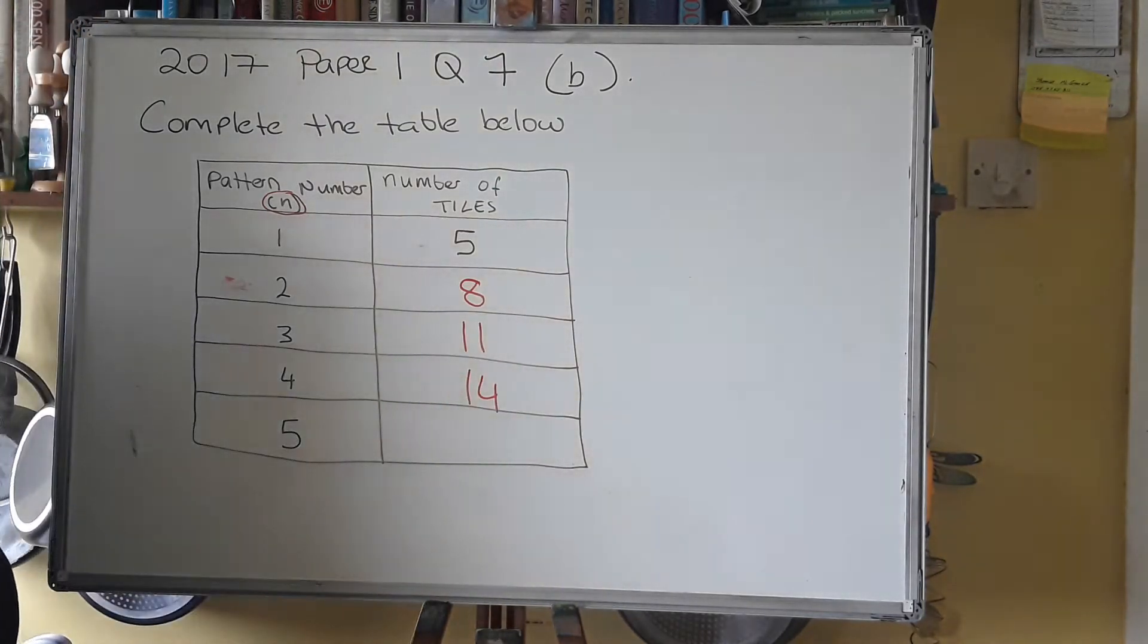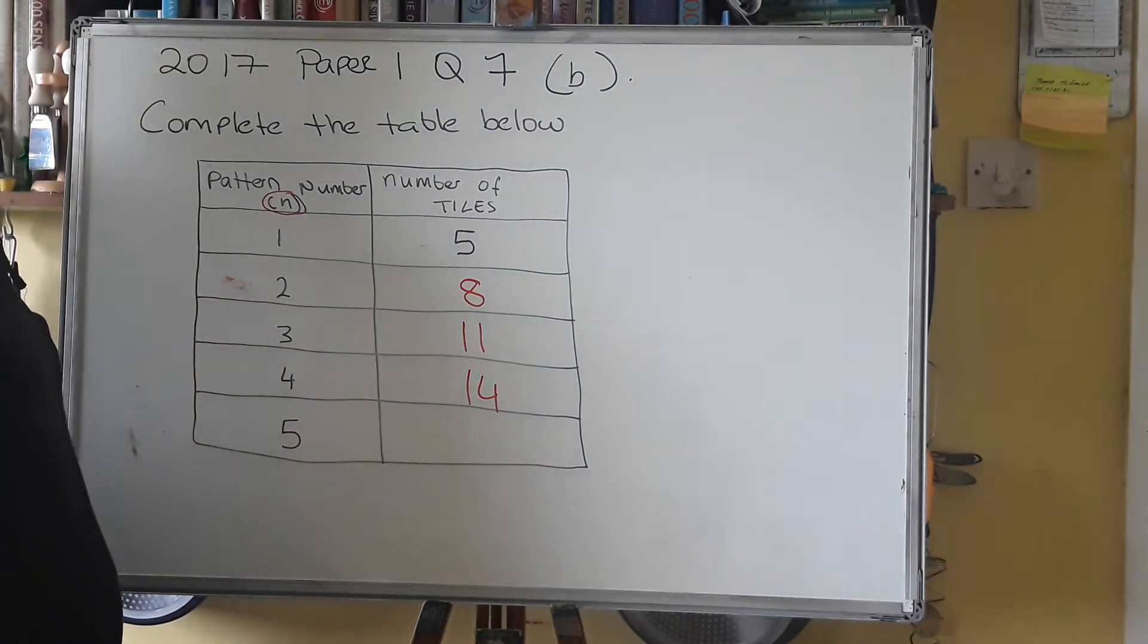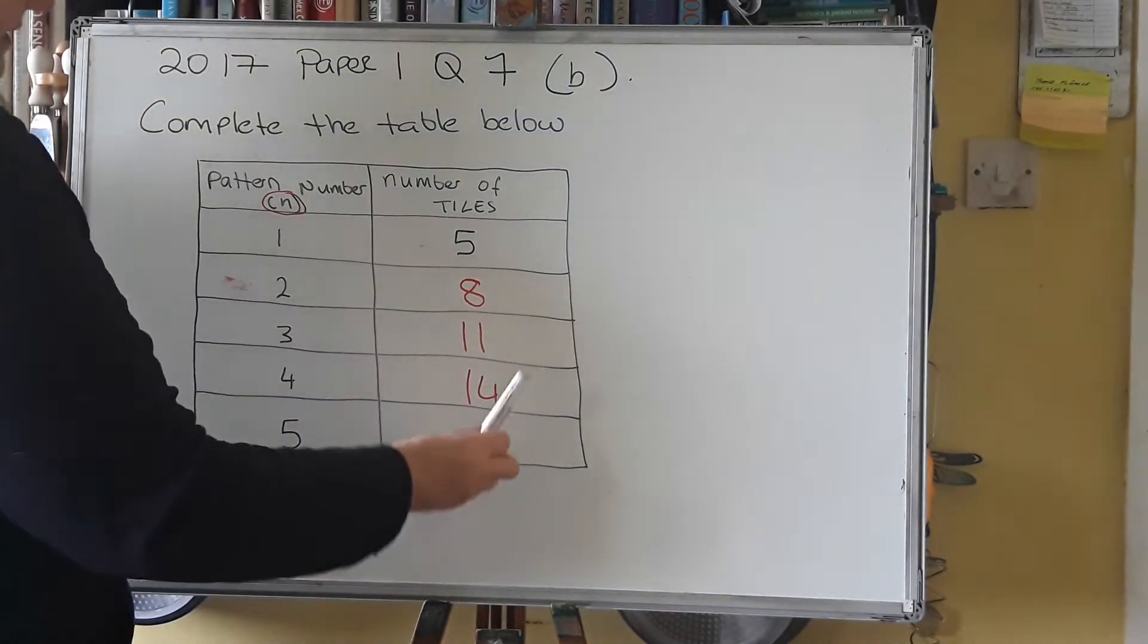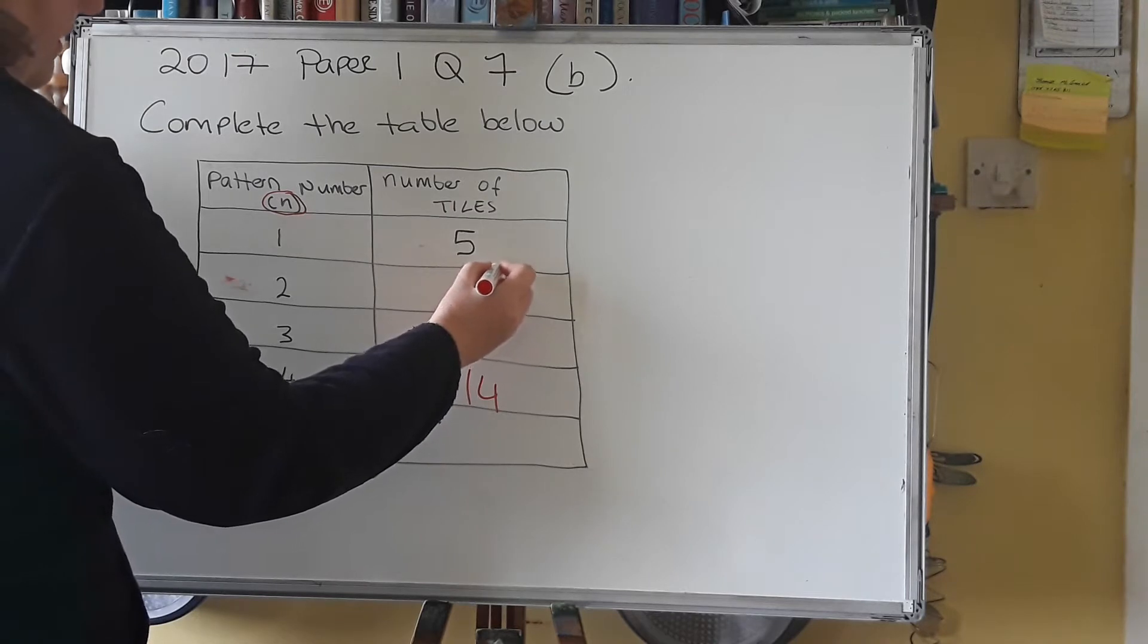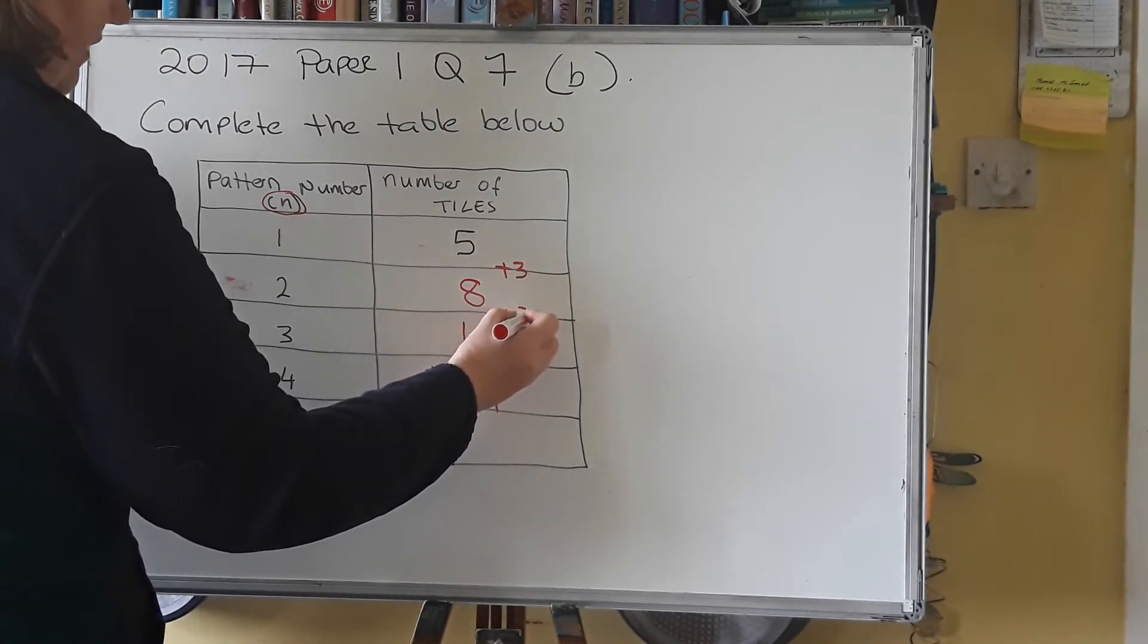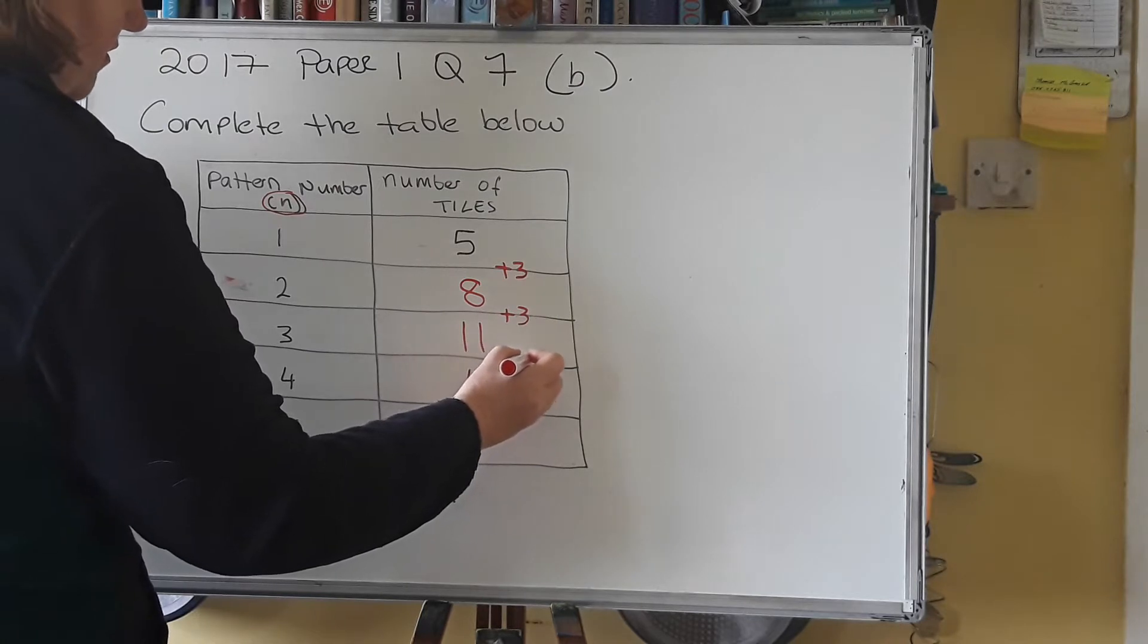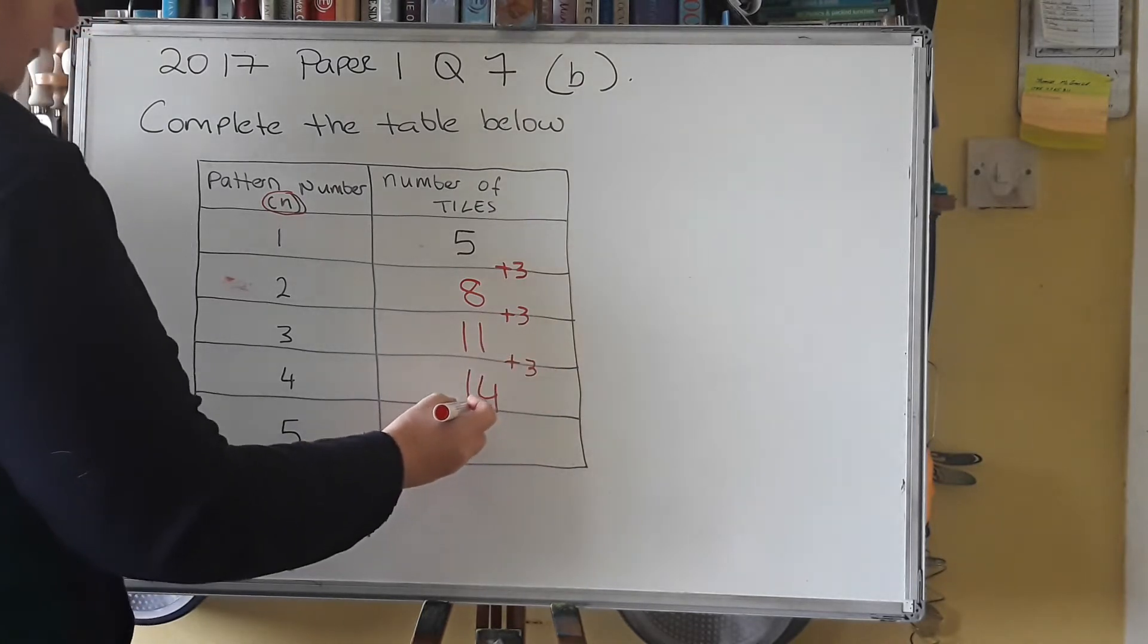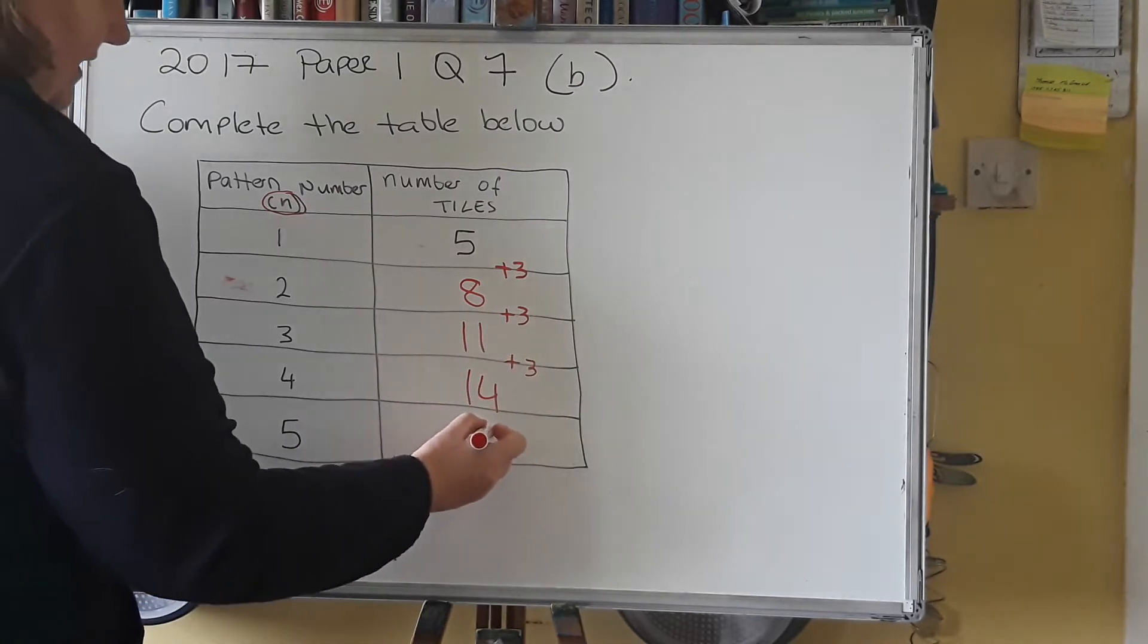So without having to draw out the fifth one, you can see what the connection is. And every time, it's going up by 3. So the next one, 14, 15, 16, 17.